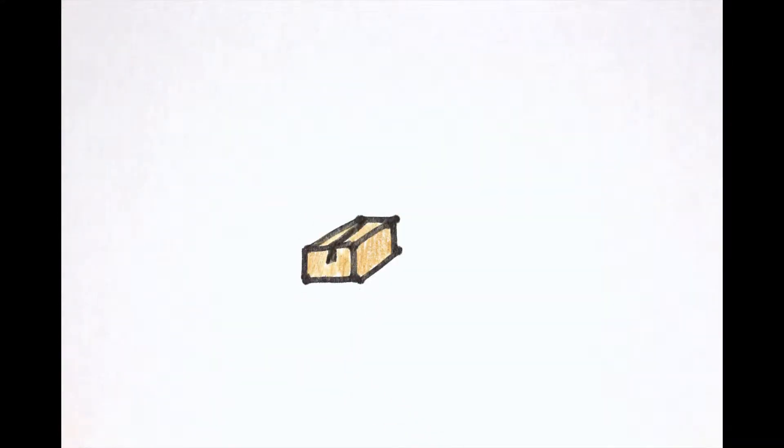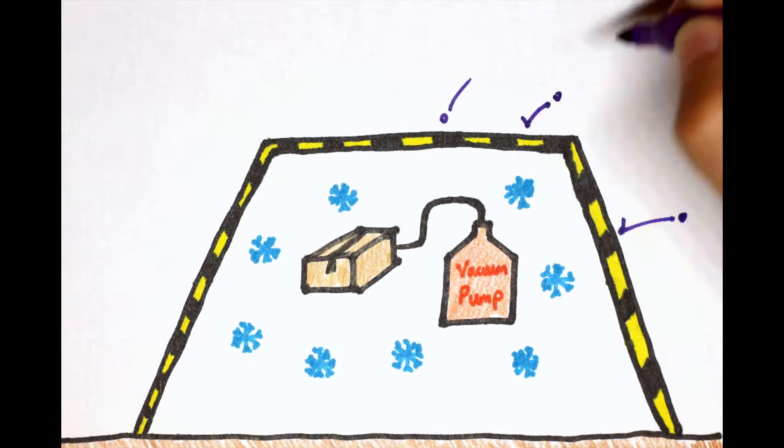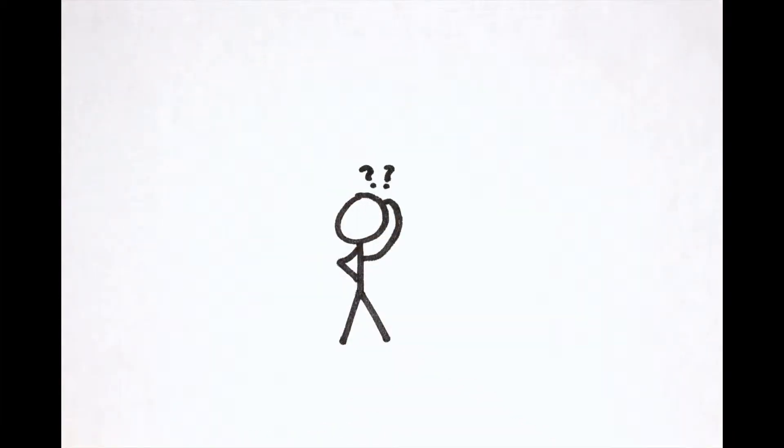But what if you completely sealed the box, sucked all the air out to create a vacuum, cooled it to the lowest possible temperature, and shielded it from any external radiation or cosmic particles? Surely the box would contain nothing, right? Well, not exactly, and to understand why, we need to look at quantum field theory.